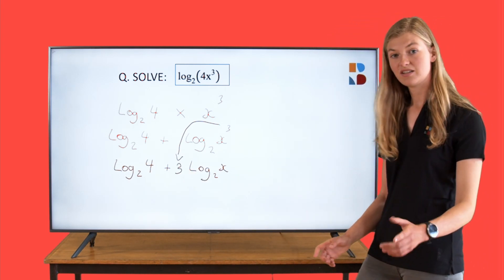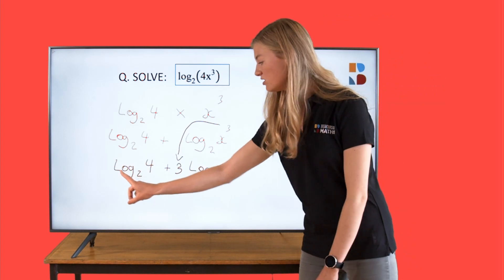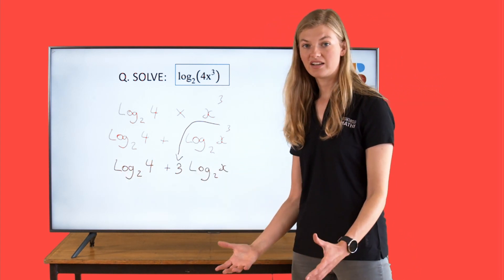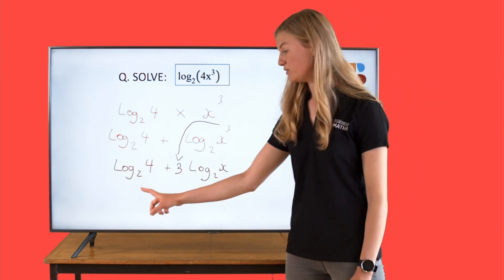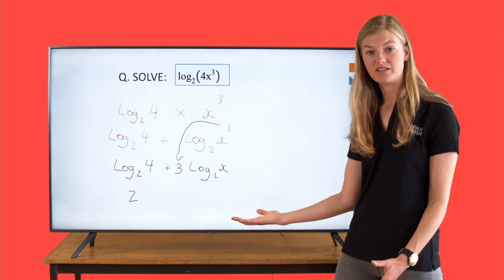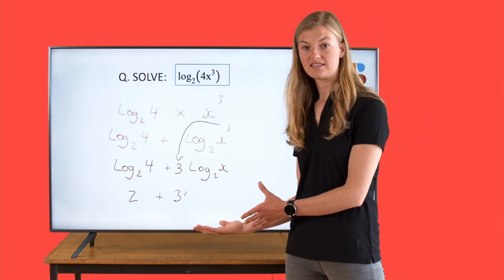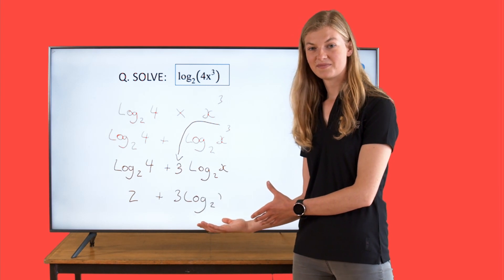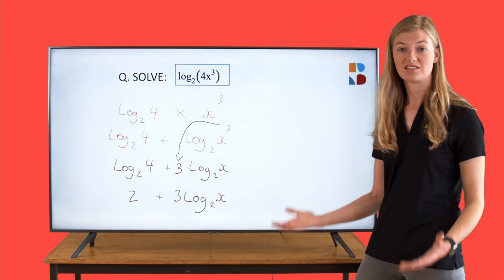That's it. Right. One last thing. If we put log to the base 2 of 4 into our calculator, we'll find that that's equal to 2. And then finally, this is as simplified as we can go, so we leave it as it is. And that's logs simplified.